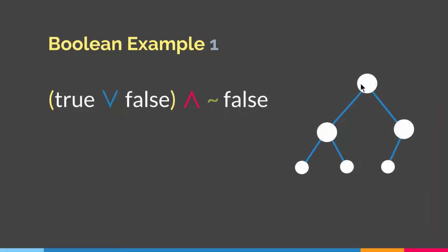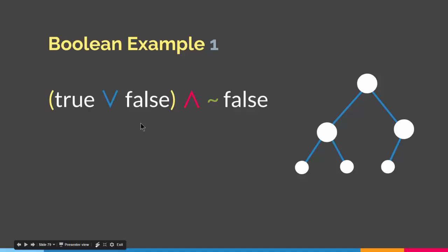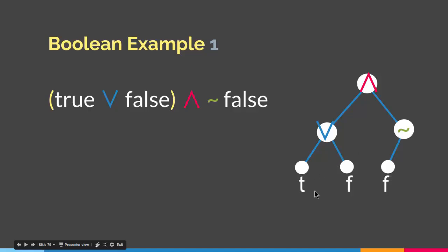Now let's talk about a boolean example. How can we turn a boolean expression into a tree? The idea is the same. Let's say we have true OR false, the whole thing AND NOT false. The leaves will contain the falses and the trues. We start with the AND, then on the right we have the NOT with a false leaf, and on the left we have the OR with a false and a true as leaves. We read it from bottom to top: true OR false, the whole thing AND NOT false. It's very intuitive how you can decompose a boolean or algebraic expression into a tree.